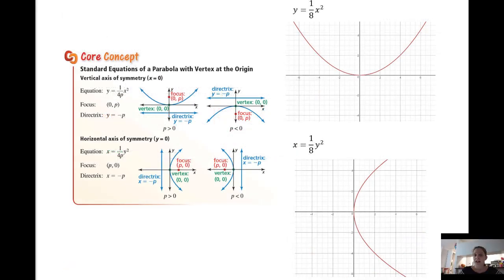Now we're going to look at standard equations of a parabola with a vertex at the origin. We'll begin with parabolas that open upward or downward, the ones that you're used to seeing. The equation is y equals one-fourth p x squared, where the focus is zero comma p, and the directrix is y equals negative p. I put an example graph here. If we have an equation like y equals one-eighth x squared, we need to first determine that p value.